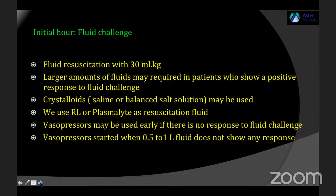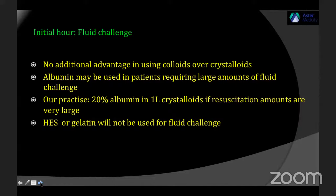If after 500 to 1000 ml of fluids there is no improvement in blood pressure, I simultaneously start a vasopressor — noradrenaline — through a peripheral line if a central line is not available. Regarding colloids: no major studies show colloids are superior to crystalloids, although post-hoc analysis suggests albumin may have an advantage in severe septic shock. In practice, after 1.5 to 2 liters of crystalloid, I add 20% albumin mixed to make a 4–5% solution. Do not give starch or gelatin as these can cause additional problems.